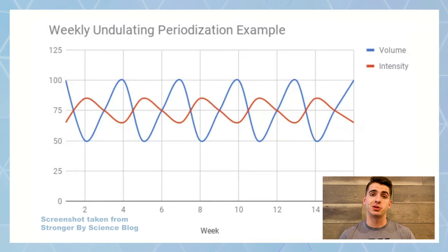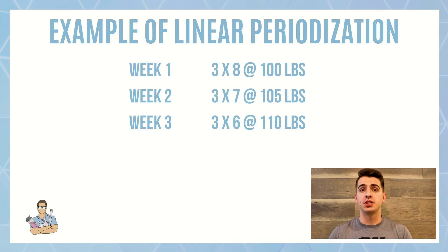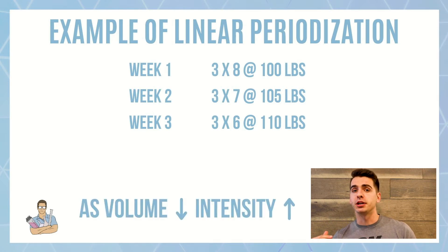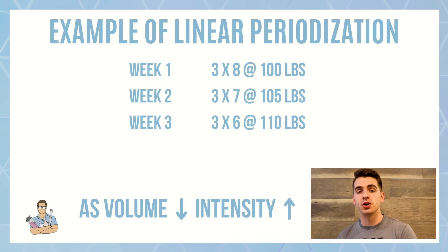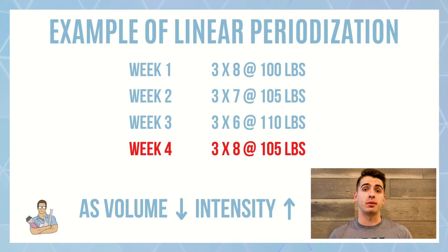How does that translate into when we're actually writing a program for ourselves or for clients? It depends on their lifting level. If you're a beginner, I'd recommend just following linear periodization. Start at a specific weight — let's say you're benching three by eight at a hundred pounds. The next week you go to a hundred five pounds for a three by seven, then a hundred ten for a three by six. You're decreasing volume, having fewer reps each week, but increasing intensity. Follow that until you plateau, then it might be time to take a deload. After that, go back and maybe do three by eight at a hundred five pounds, or three by ten at a hundred pounds. The goal long term is to add weight to the bar or reps.